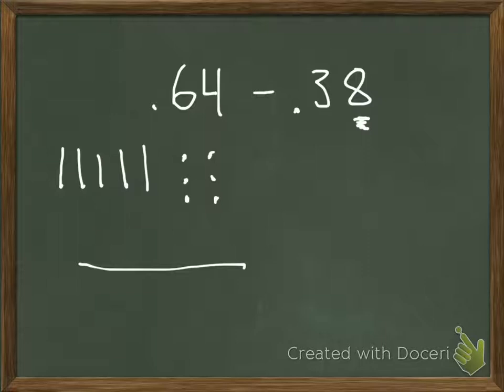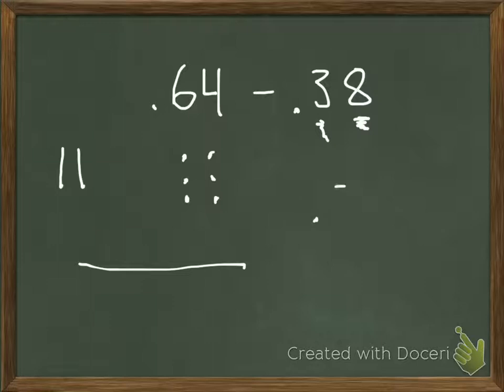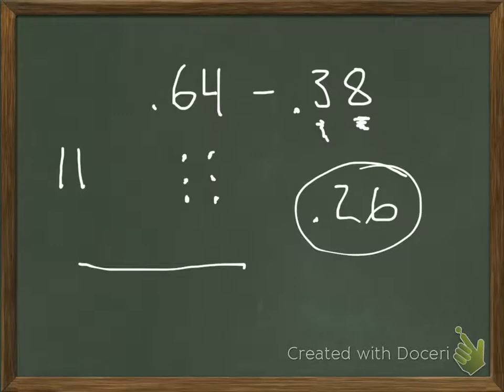I'm left with 6 hundredths. I then move on to my next place and subtract my tenths. I need to subtract 3 tenths from the 6 tenths I have. I subtract 1, 2, 3 full tenths, and I'm left with 2 tenths and 6 hundredths. Therefore, my answer would be 26 hundredths.